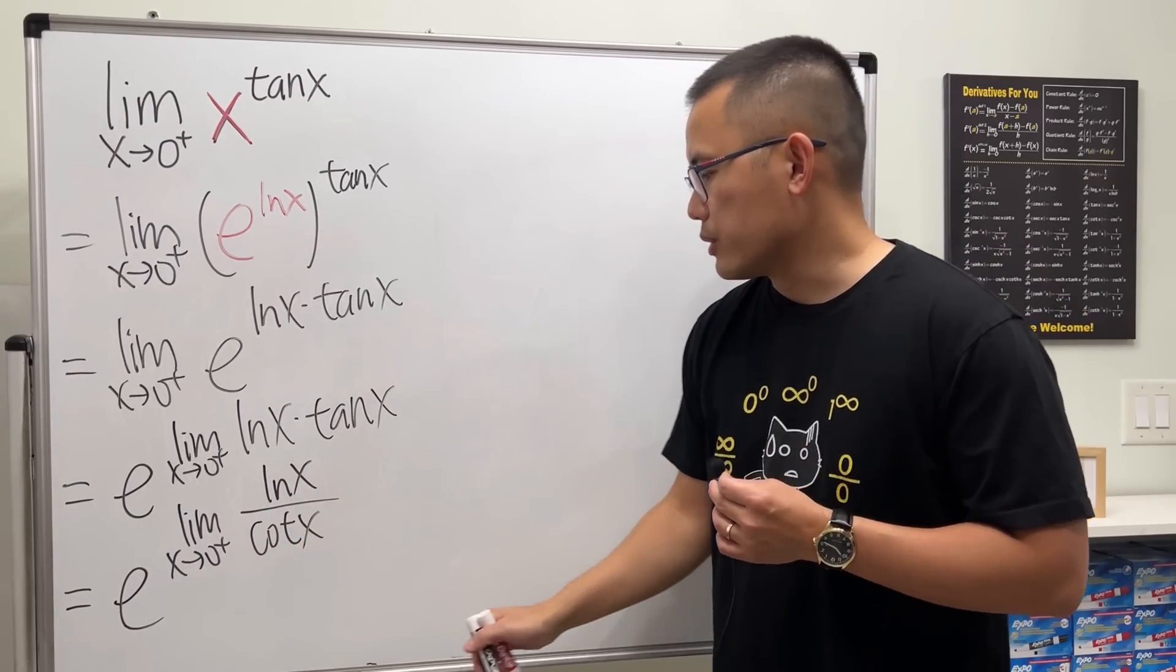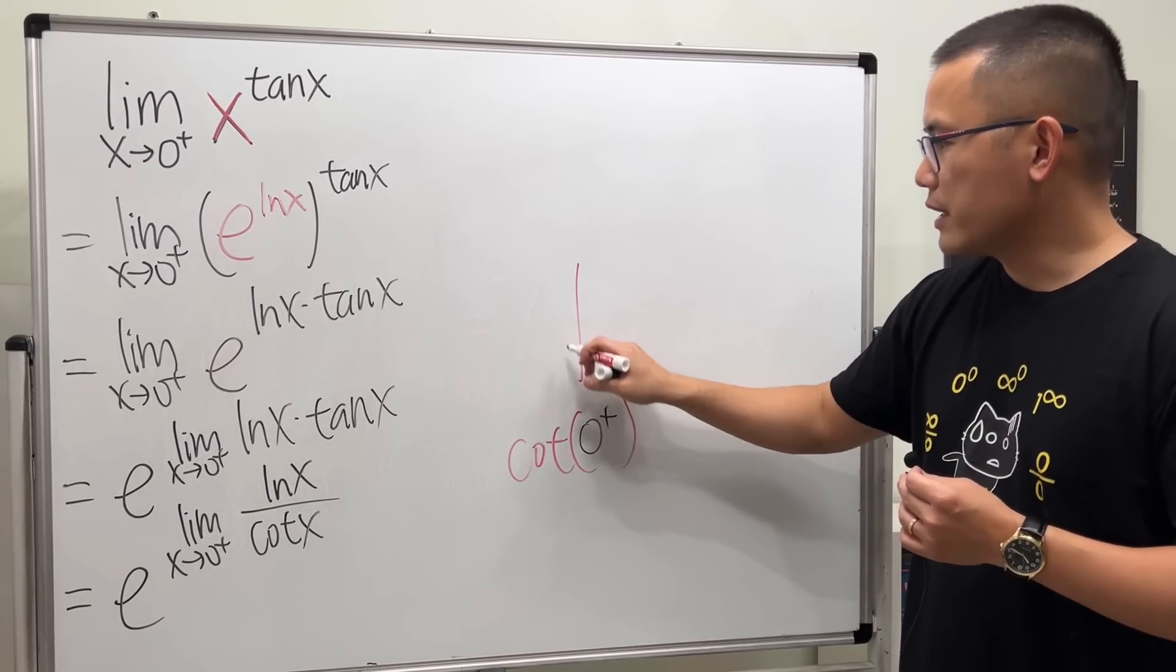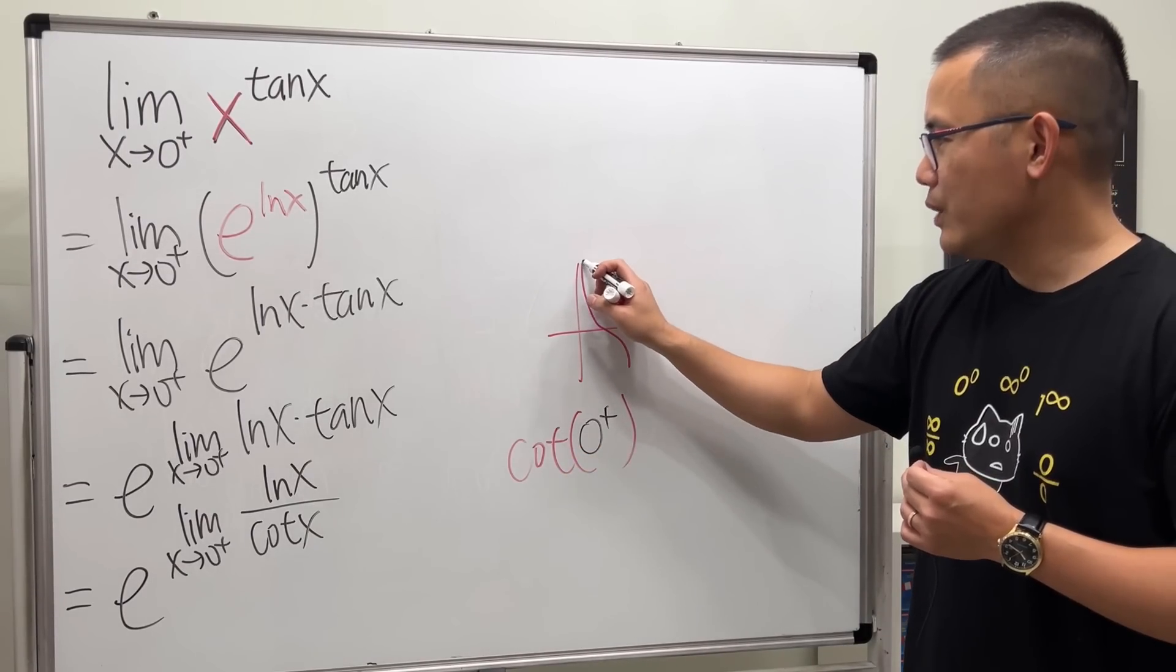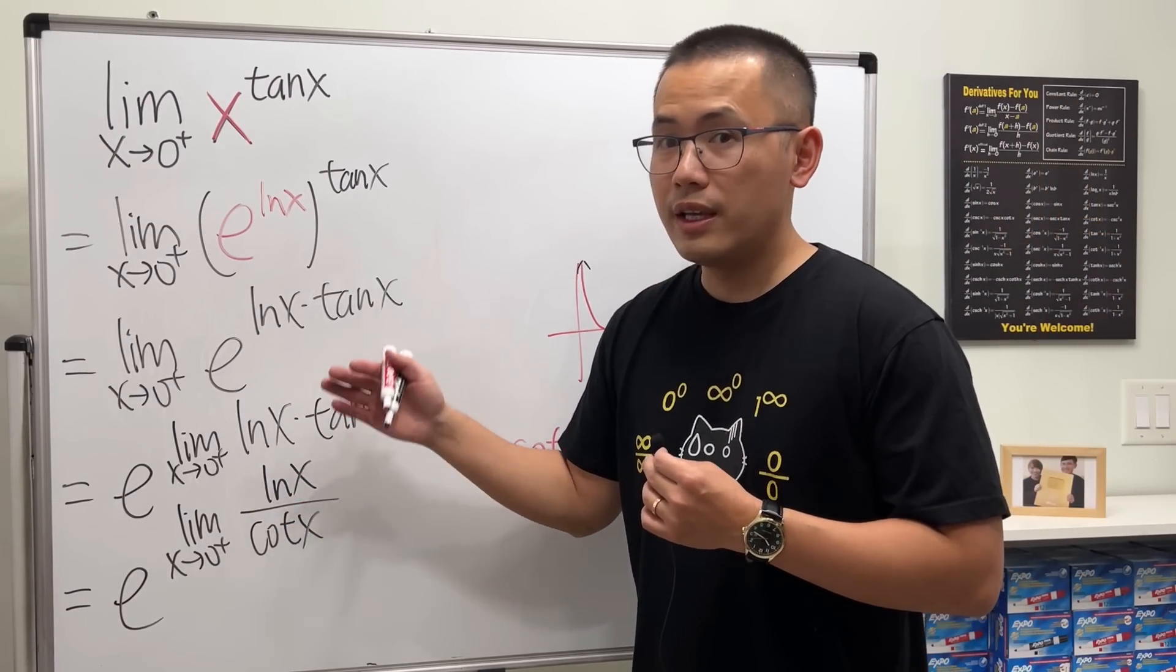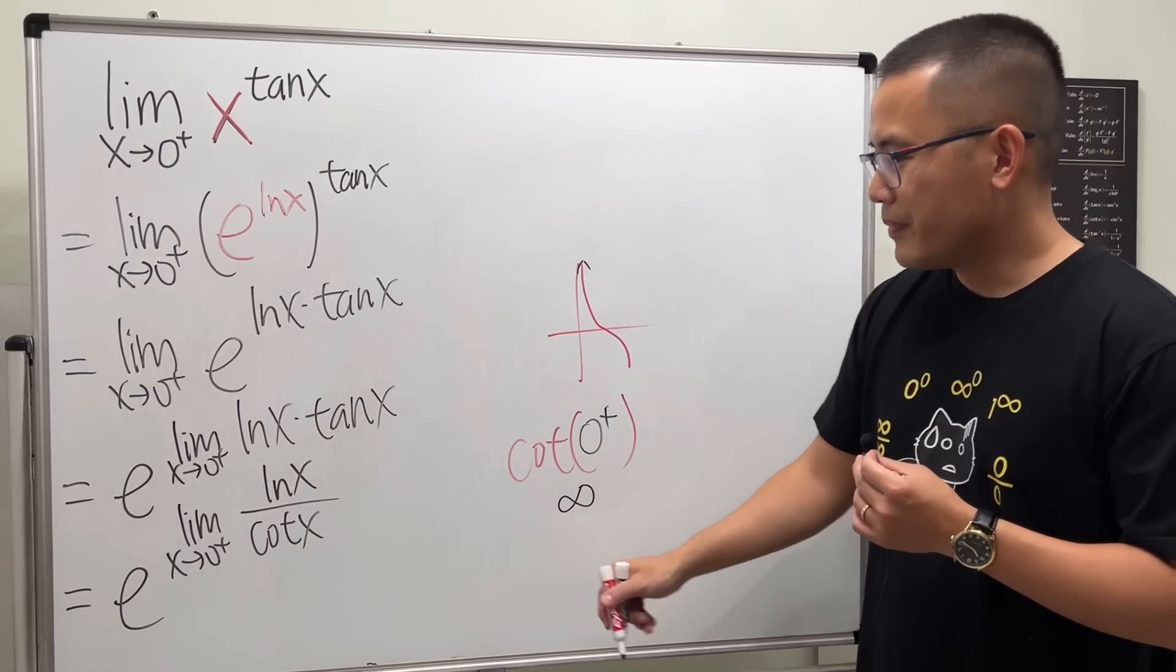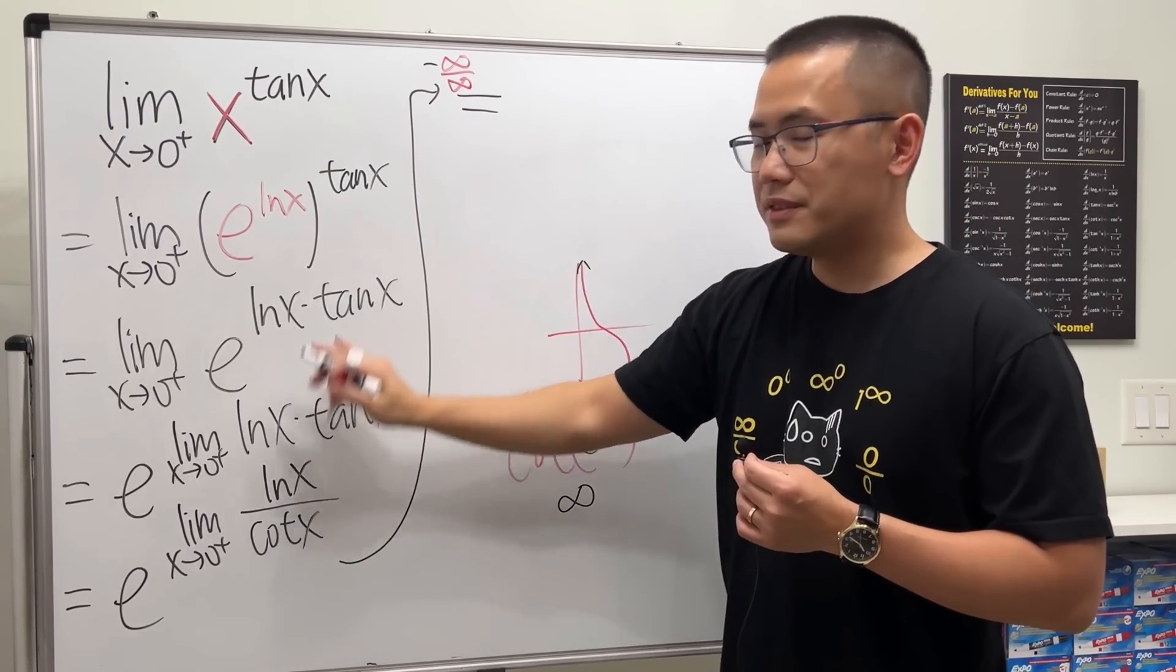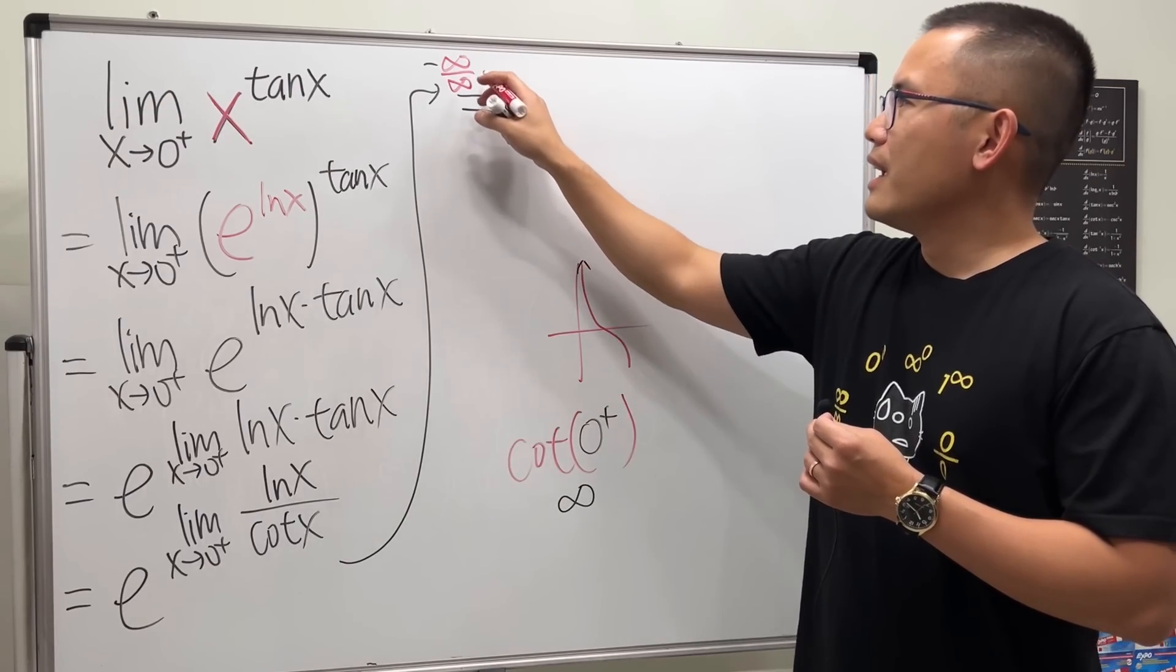If we have zero plus into cotangent, let me just mention this real quick. You can focus on the graph again. So cotangent x zero plus, it will give you positive infinity. So have a look. When we put zero plus into ln, we get negative infinity, per our discussion earlier. On the bottom we get positive infinity. So we can use L'Hôpital's rule here, because now we have infinity over infinity. Yes, we have a negative sign, but doesn't matter. It's a negative one times infinity. So we can use L'Hôpital's rule here.